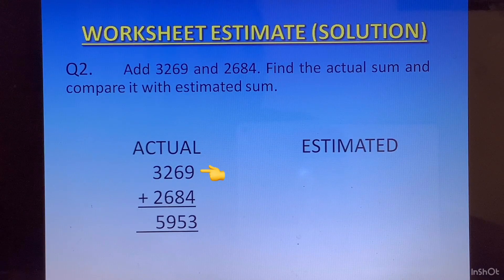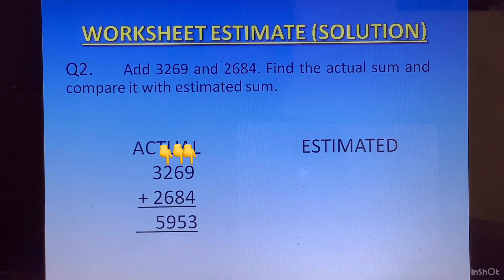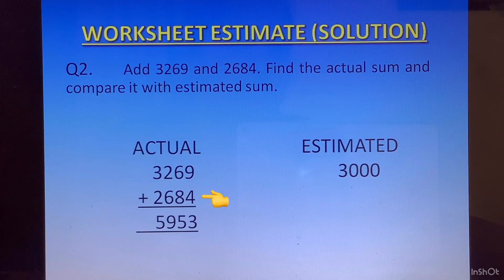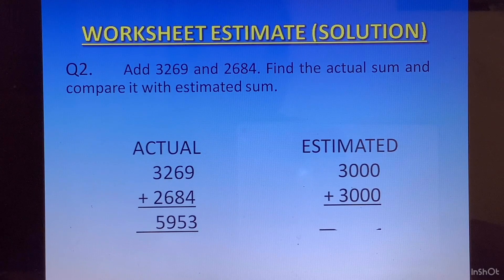To find the estimated sum, we will take the first number 3269 and round it off. We look at the hundreds place, which is 2. 2 is less than 5, so we will not change the digit at the thousands place. It will remain 3, and all the digits on the right — 2, 6, and 9 — will become 0. So the estimated value of this number is 3000. For the second number 2684, we look at the hundreds place, which is 6. 6 is greater than 5, so we will add 1 to the digit at the thousands place and convert all digits on the right to 0. We get 3000 as the estimated value. When we add them, we get 6000.